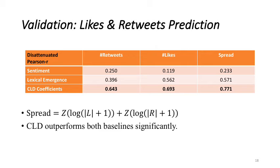Our tweet level task is like and retweet prediction. Likes and retweets are two measures that show how tweets spread. So we would like to see how good we can predict that using stickiness of words in the tweet. The values here are disattenuated Pearson r for predicting number of likes, retweet and spread of tweets. We define spread as normalized sum of the number of likes and retweets. We compare the stickiness of tweets with two baselines here: sentiment, the absolute value of the sentiment score and lexical emergence score of tweets. We performed this experiment on 30,000 tweets. And here we can see that the CLD Pearson r is significantly better than both baselines in all three tasks.